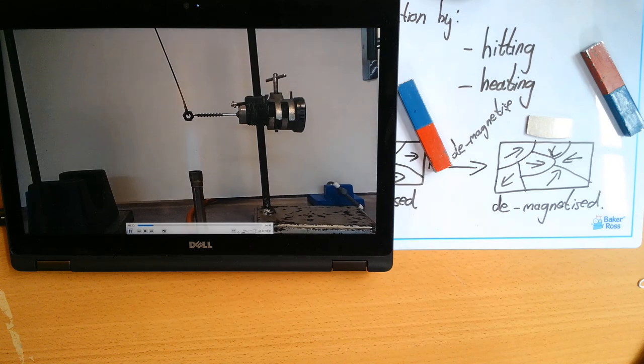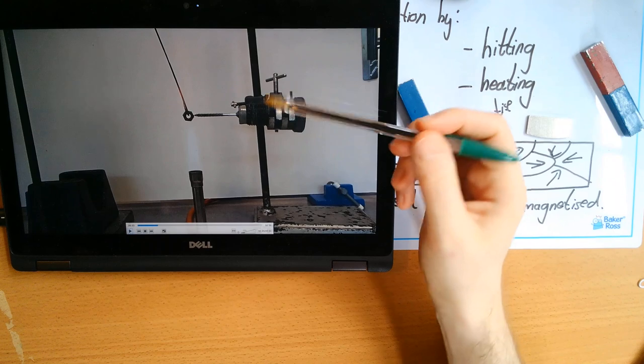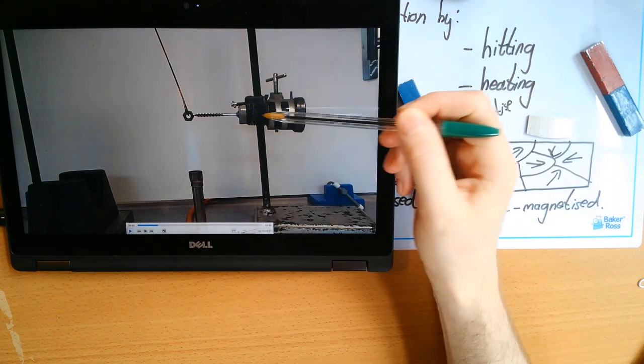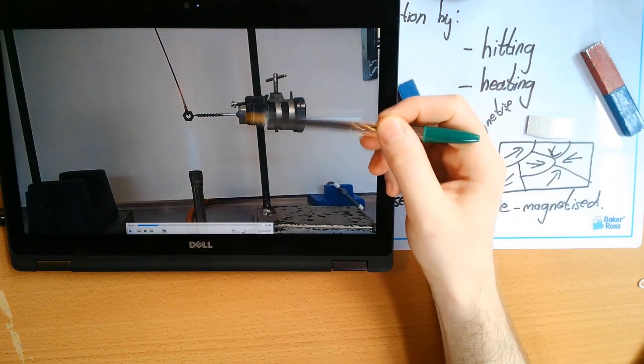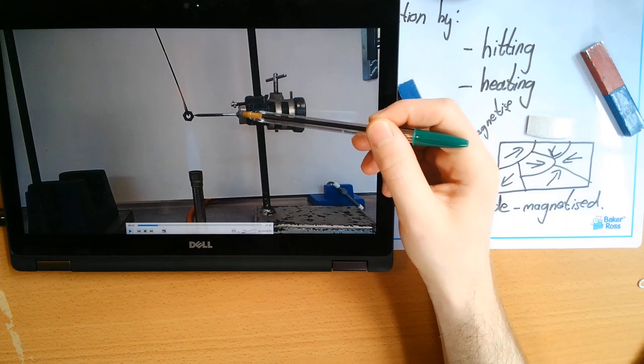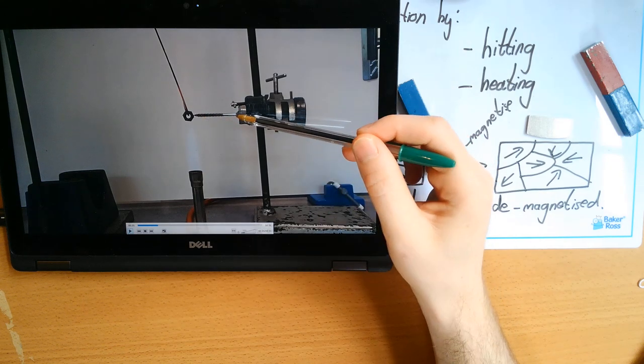And what this shows is a Bunsen burner. If I introduce things first, what you've got, this is all just a holder. This bit here is a very strong magnet. And this is a steel nail.